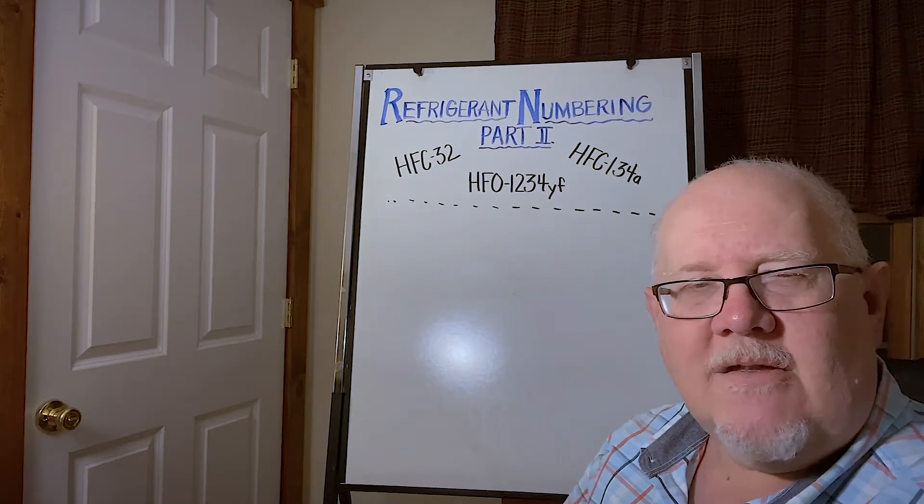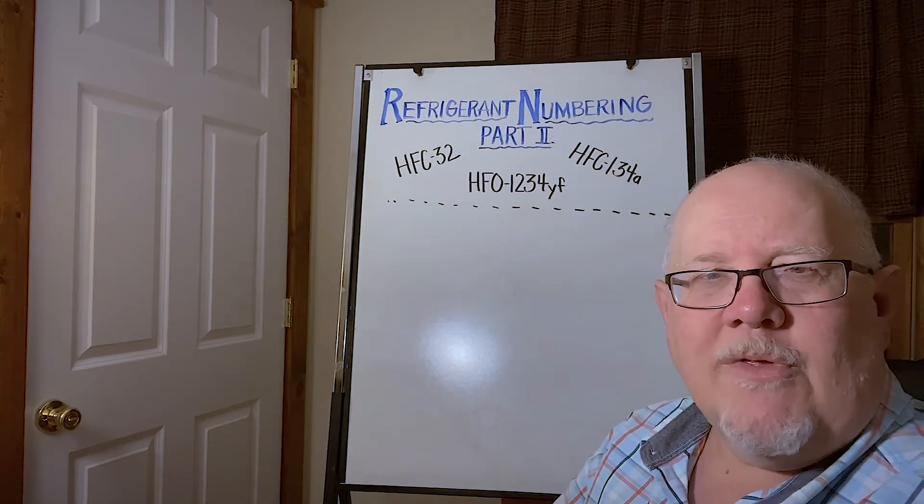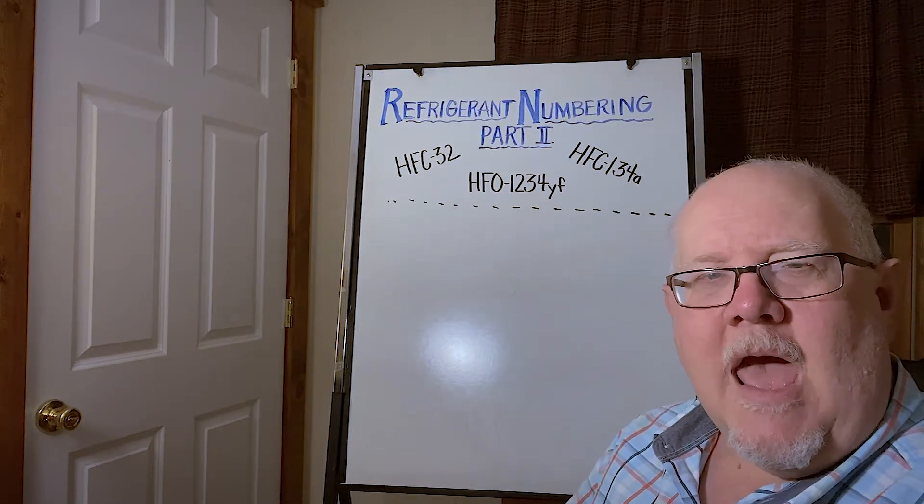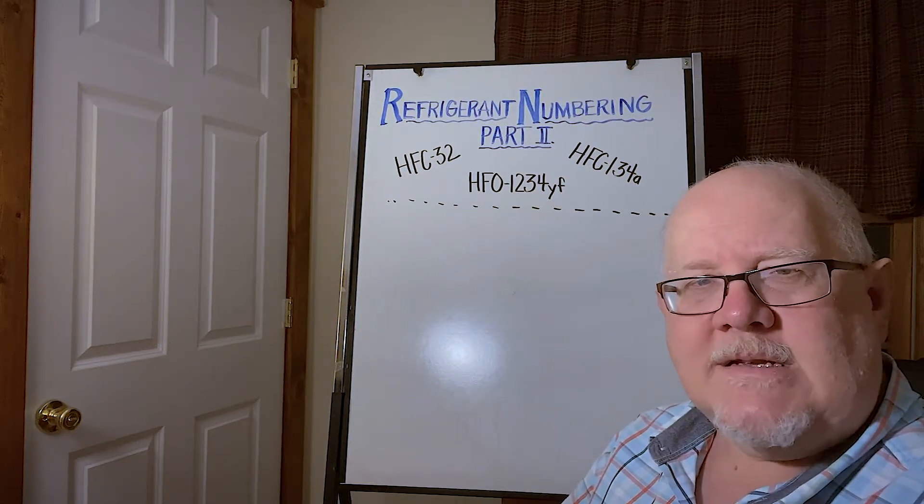When we start mixing those together to make blends and we come up with an alphabet soup of products, how do we make sense out of all that? And it's really a pretty simple process.